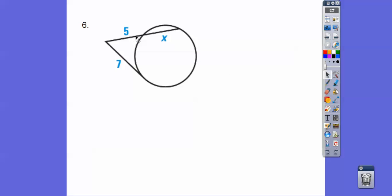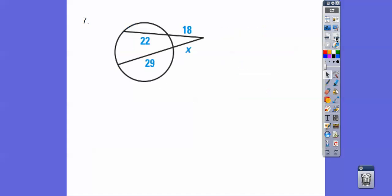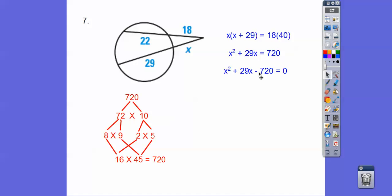Outer times whole equals tangent segment squared. So, outer times whole is tangent segment squared. And then divide. We get 24 fifths. Outer times whole. The whole is 40 equals outer times whole. The whole is X plus 29. Distribute the X through and then subtract 720 and then we factor 720. We've done this before.